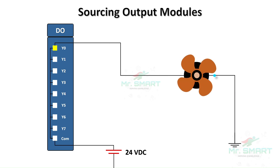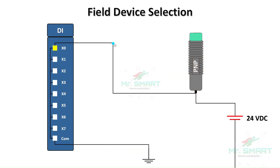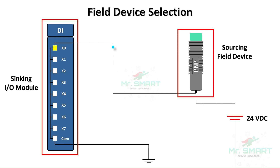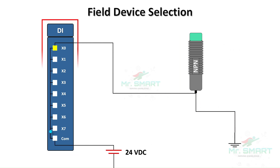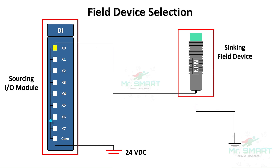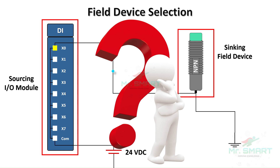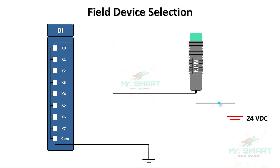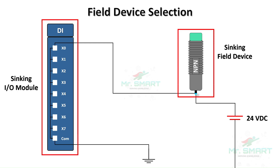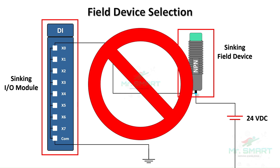Practically, most output devices can work with signals from both sinking and sourcing modules. But it's important to remember this rule while selecting your input devices such as sensors: a sourcing-type field device must be connected to a sinking I/O module, and a sinking-type field device must be connected to a sourcing I/O module. This is all about completing the circuit correctly.